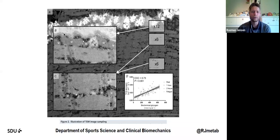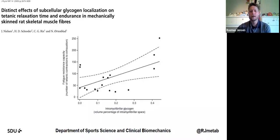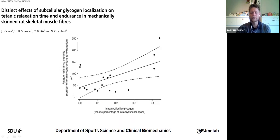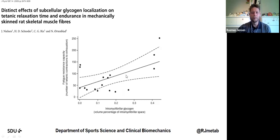In a previous study, my group showed that the amount of intramyofibrillar glycogen — close to myosin and actin — correlates best with fatigue resistance, essentially endurance. This was an in vitro model using isolated whole muscles that were stimulated, and then the number of stimulations before fatigue dropped to a set point was counted. They could see that intramyofibrillar glycogen correlated better than intermyofibrillar glycogen. That was the background.